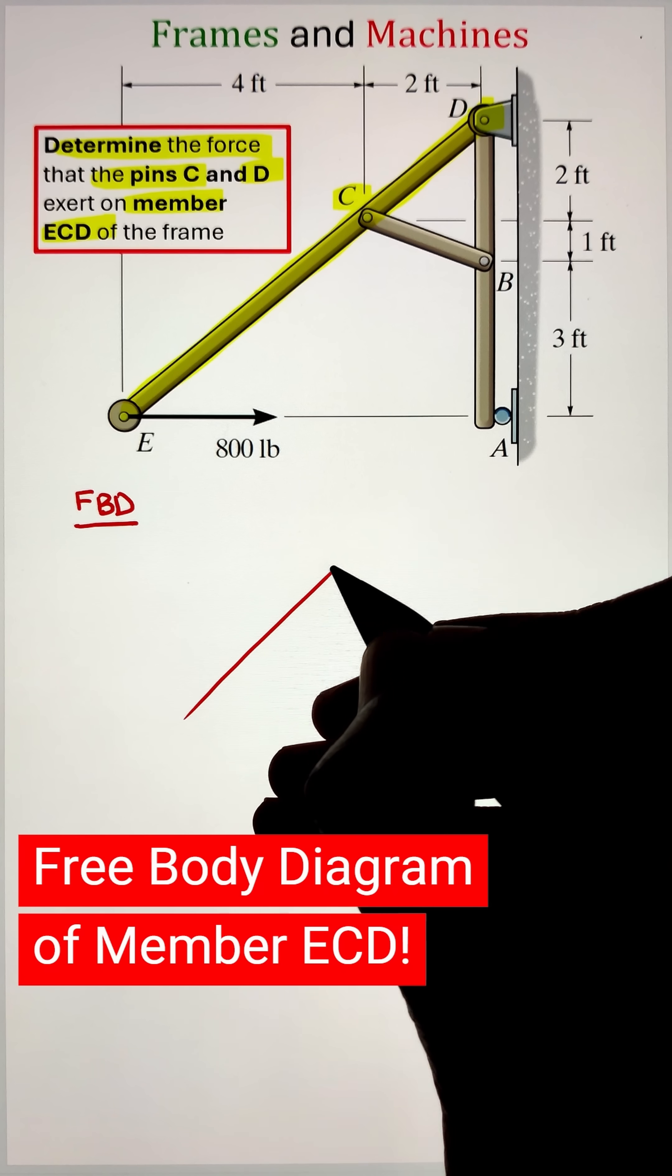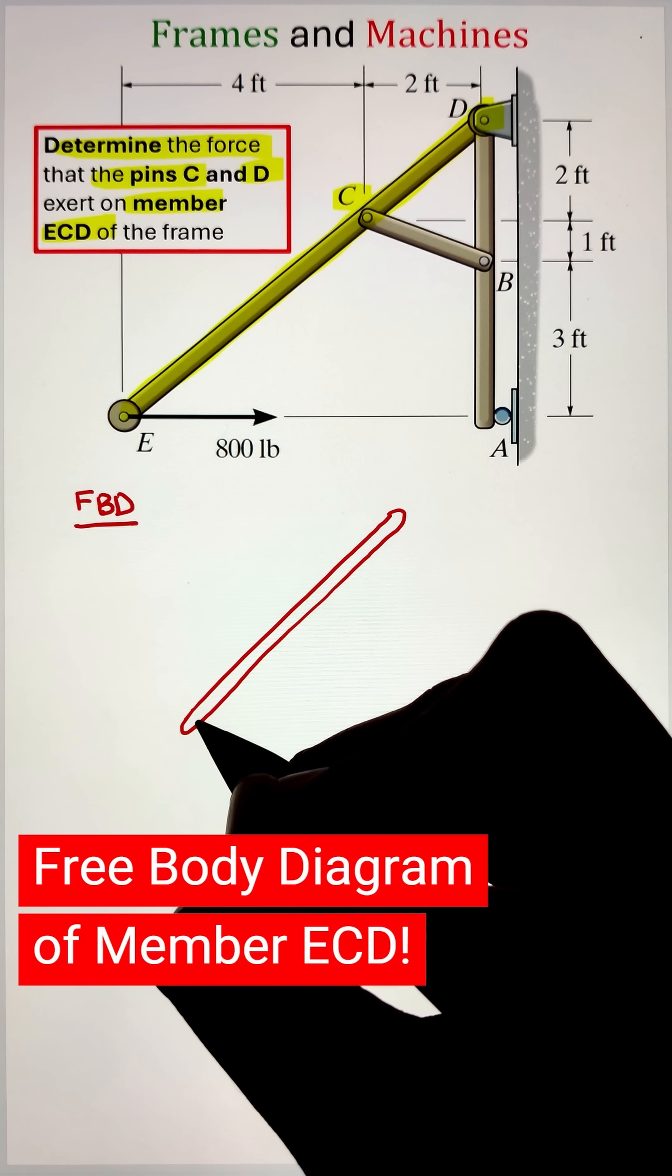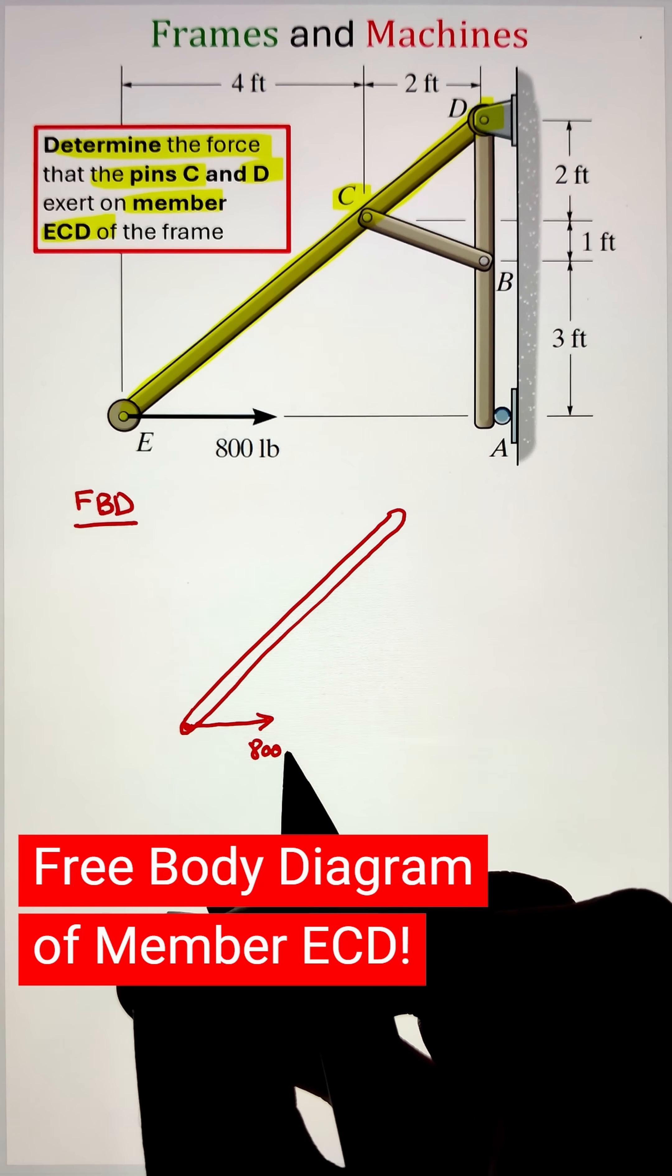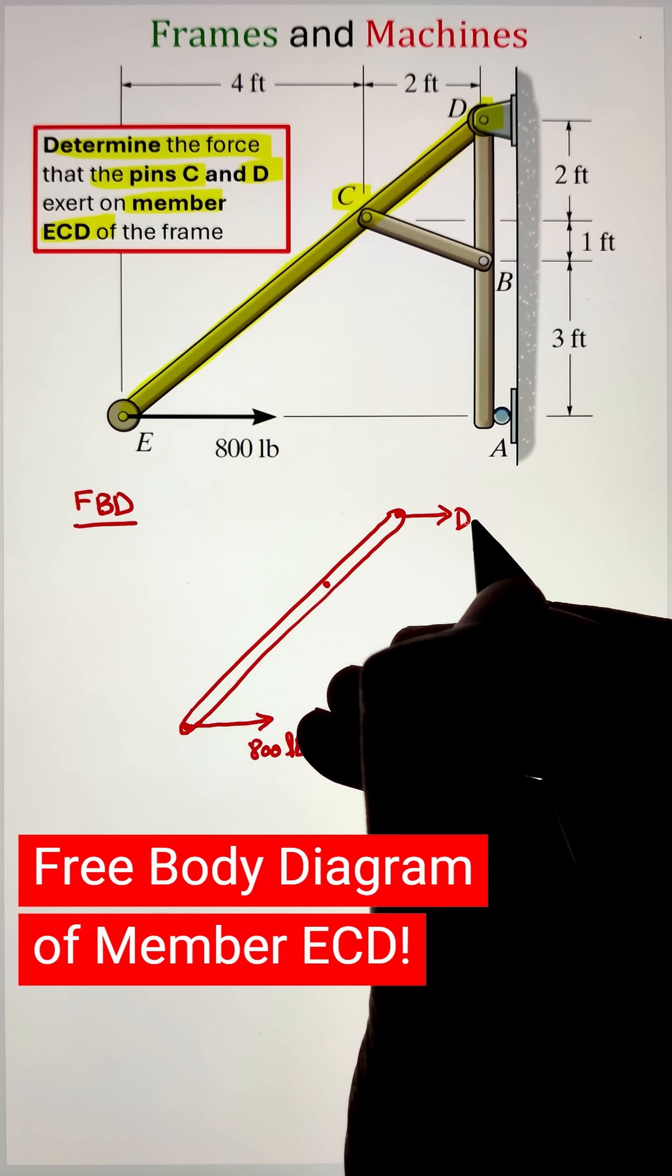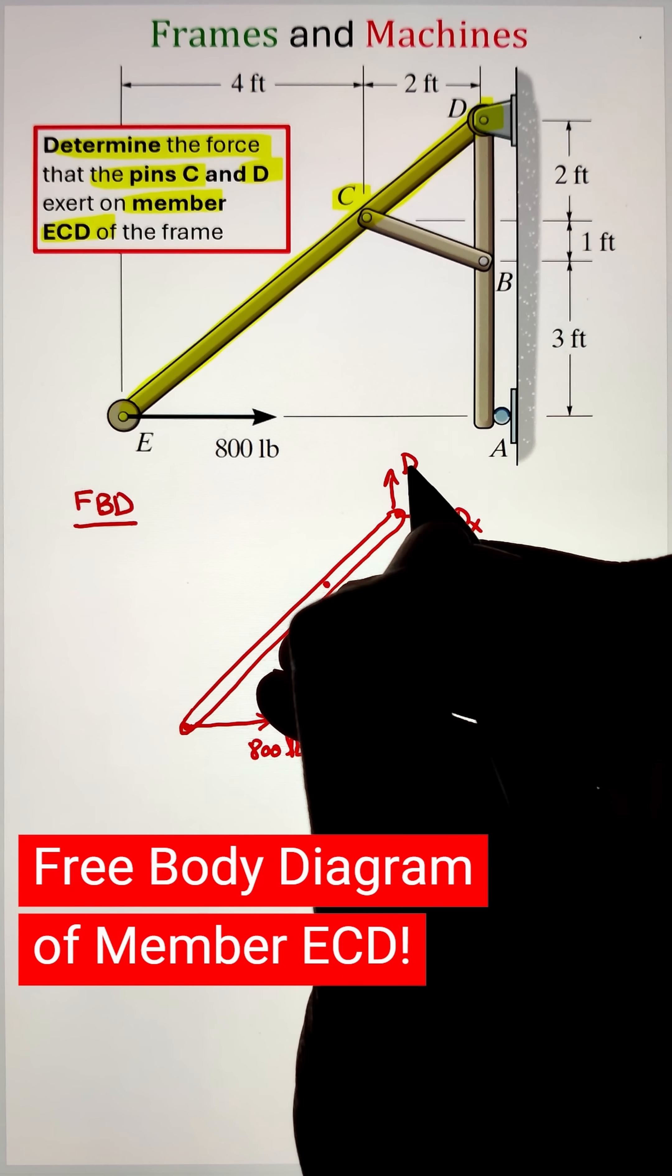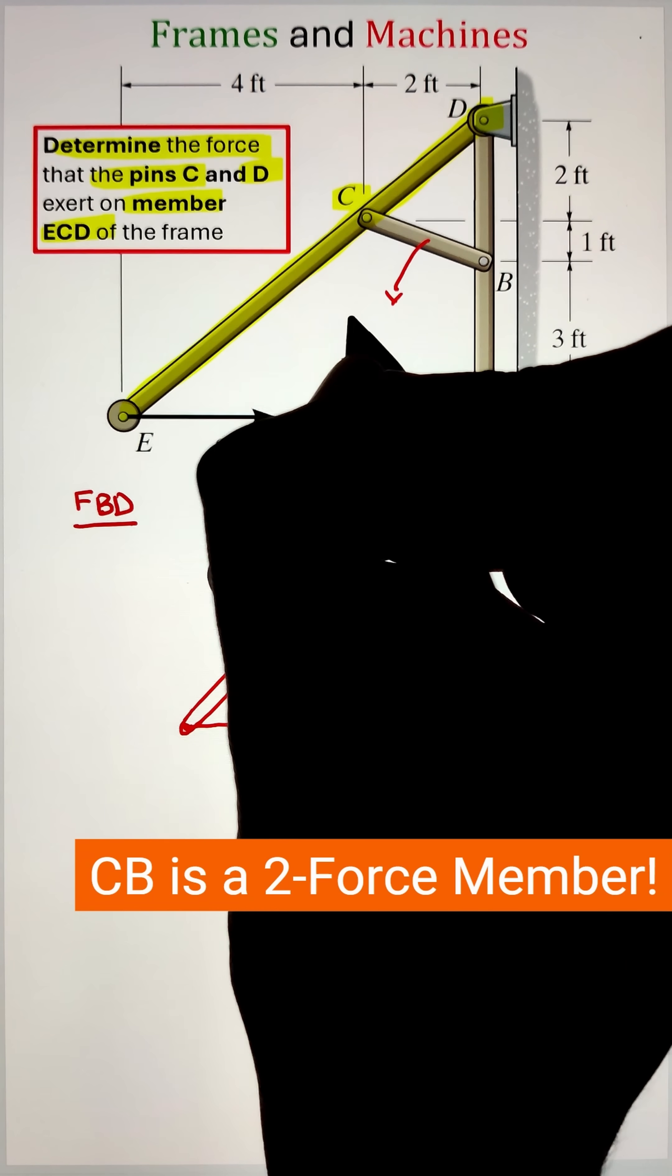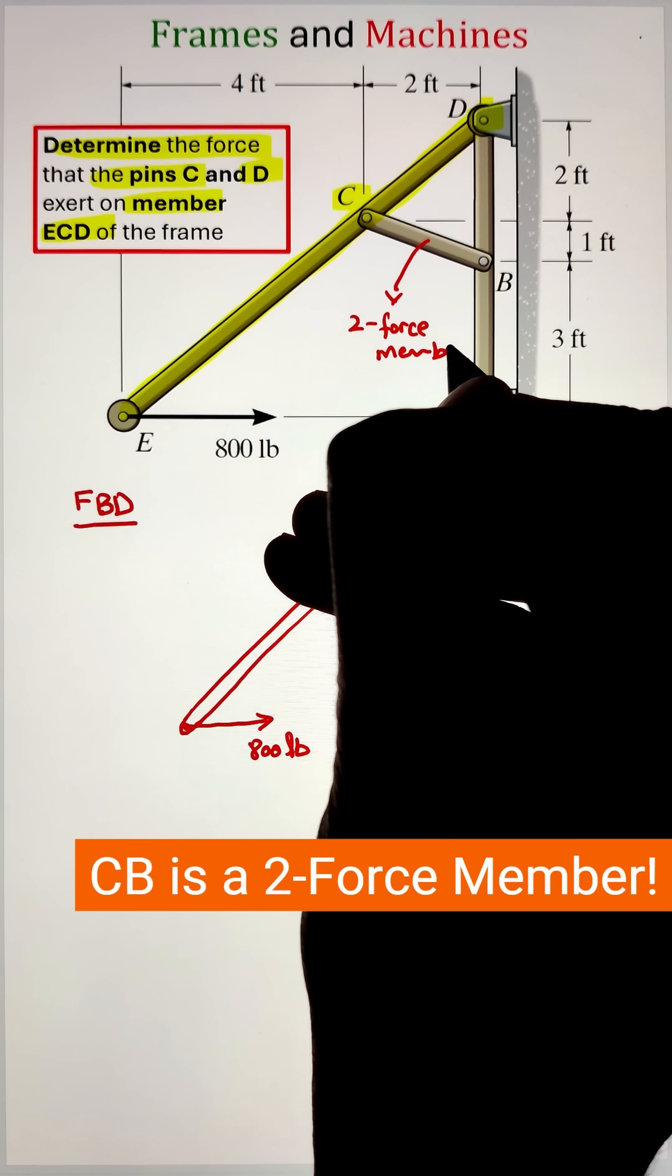To start, I have a horizontal load of 800 pounds acting in the x direction. At points C and D we have our pin supports. For point D I have the two support reactions Dx and Dy for the pin.